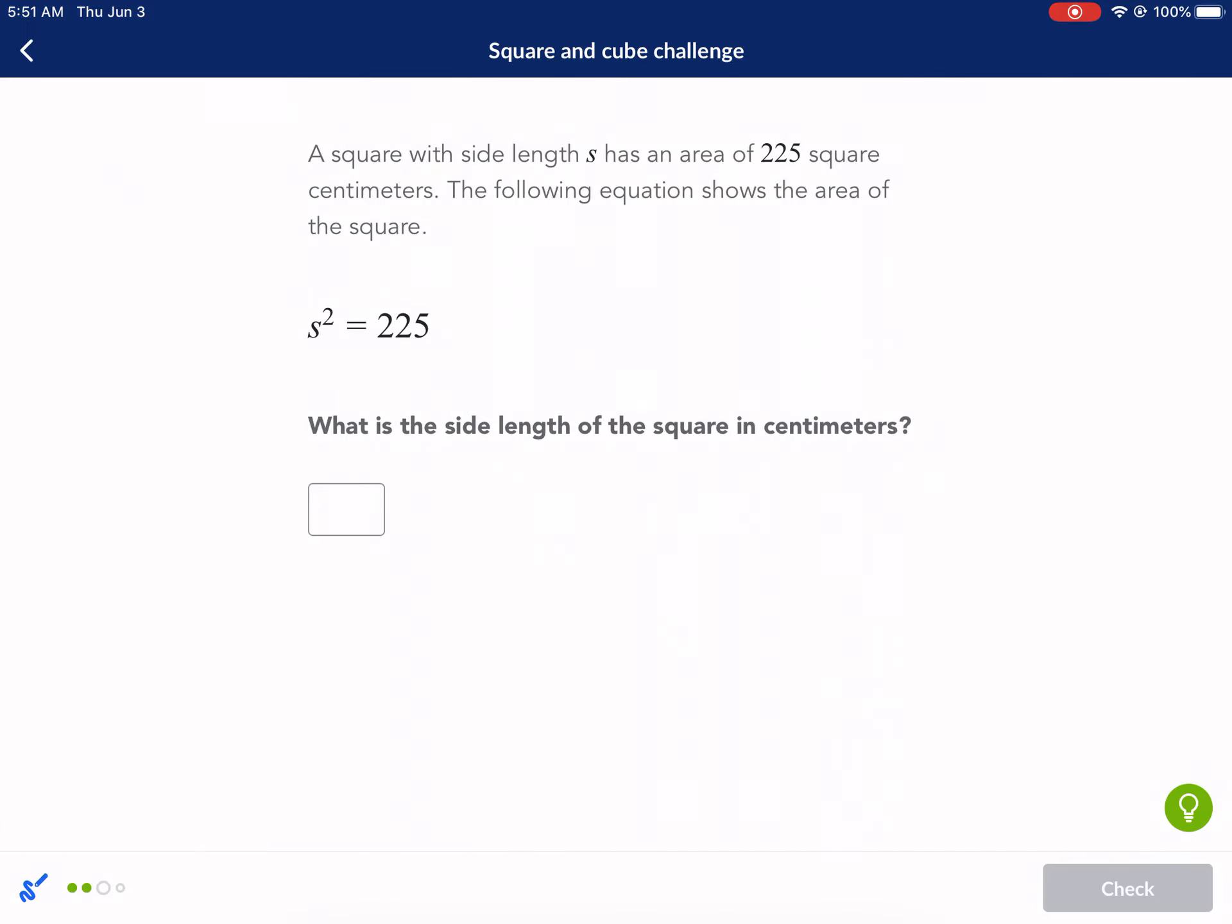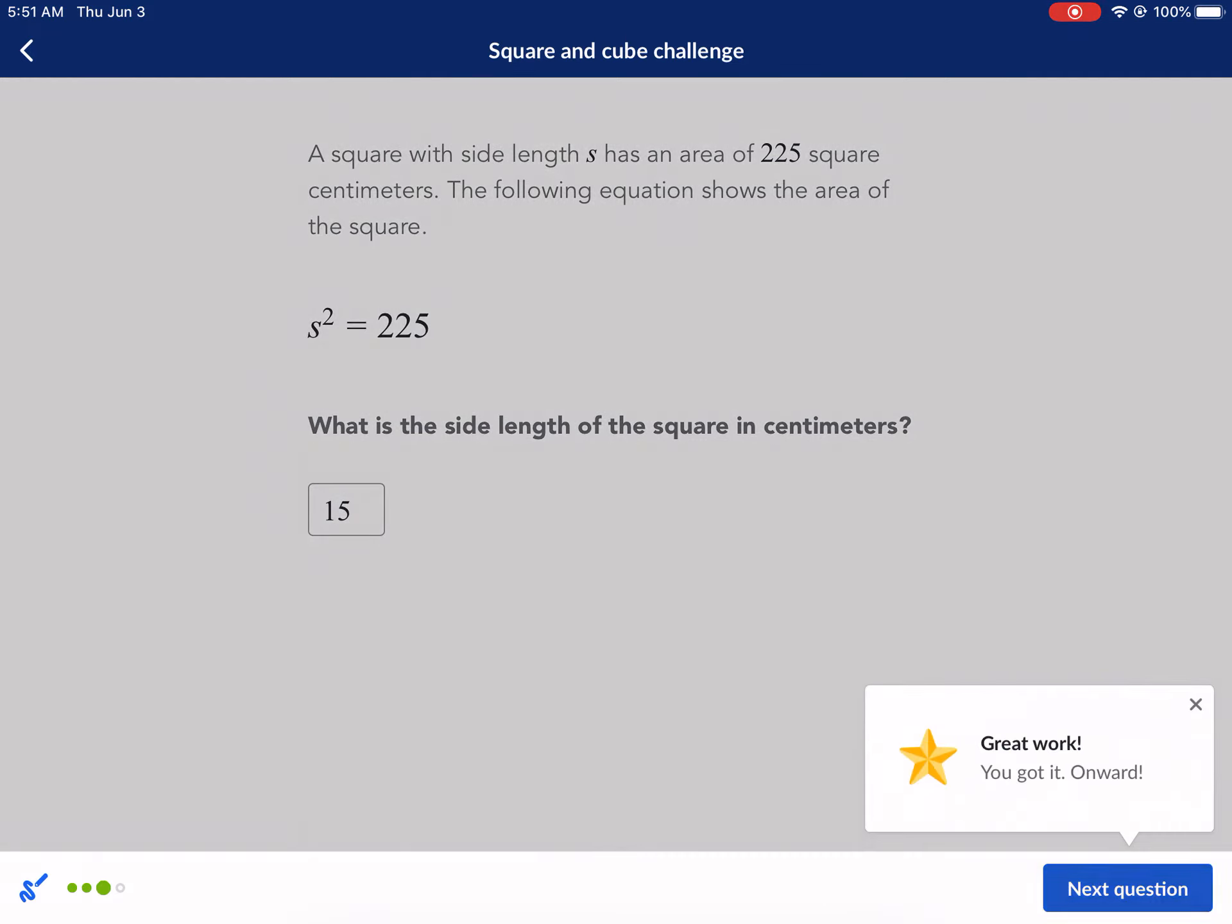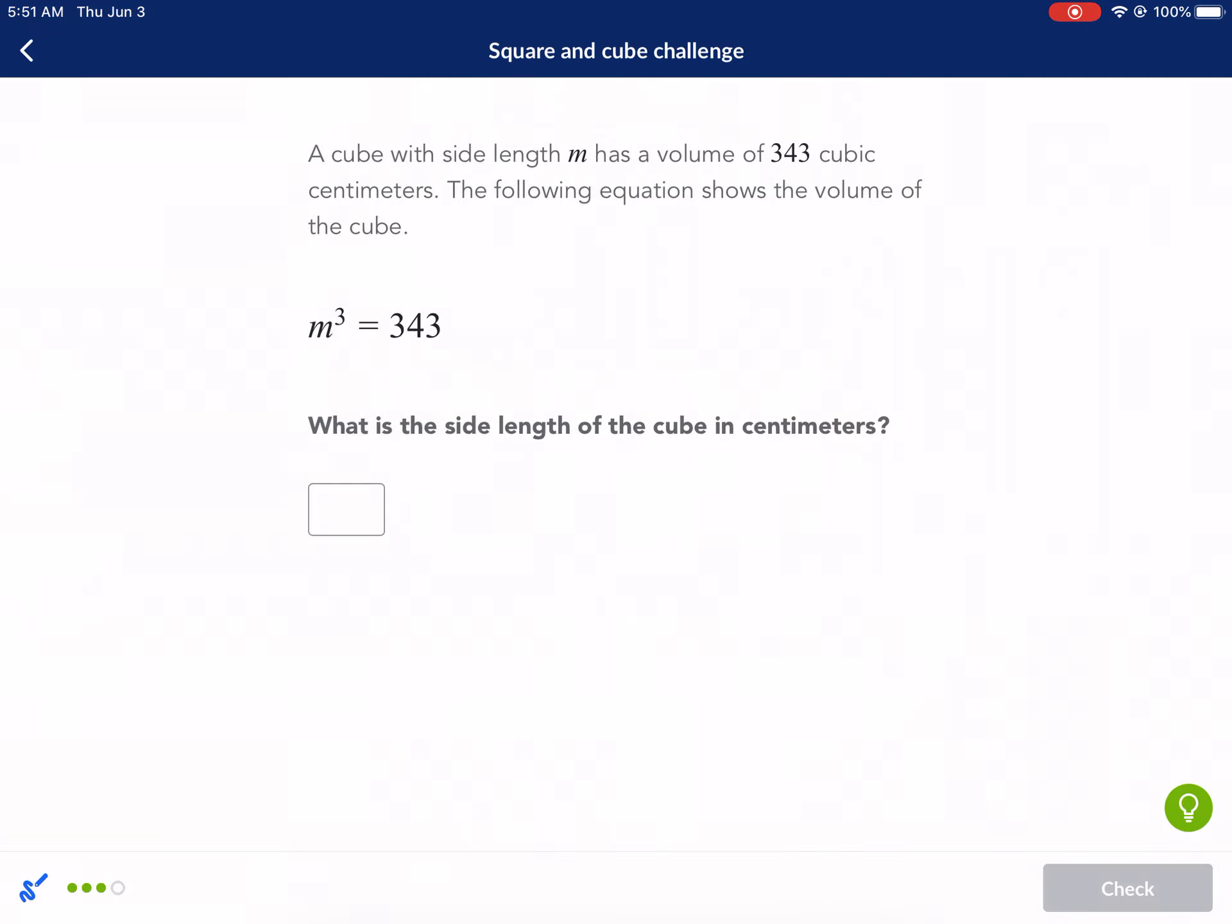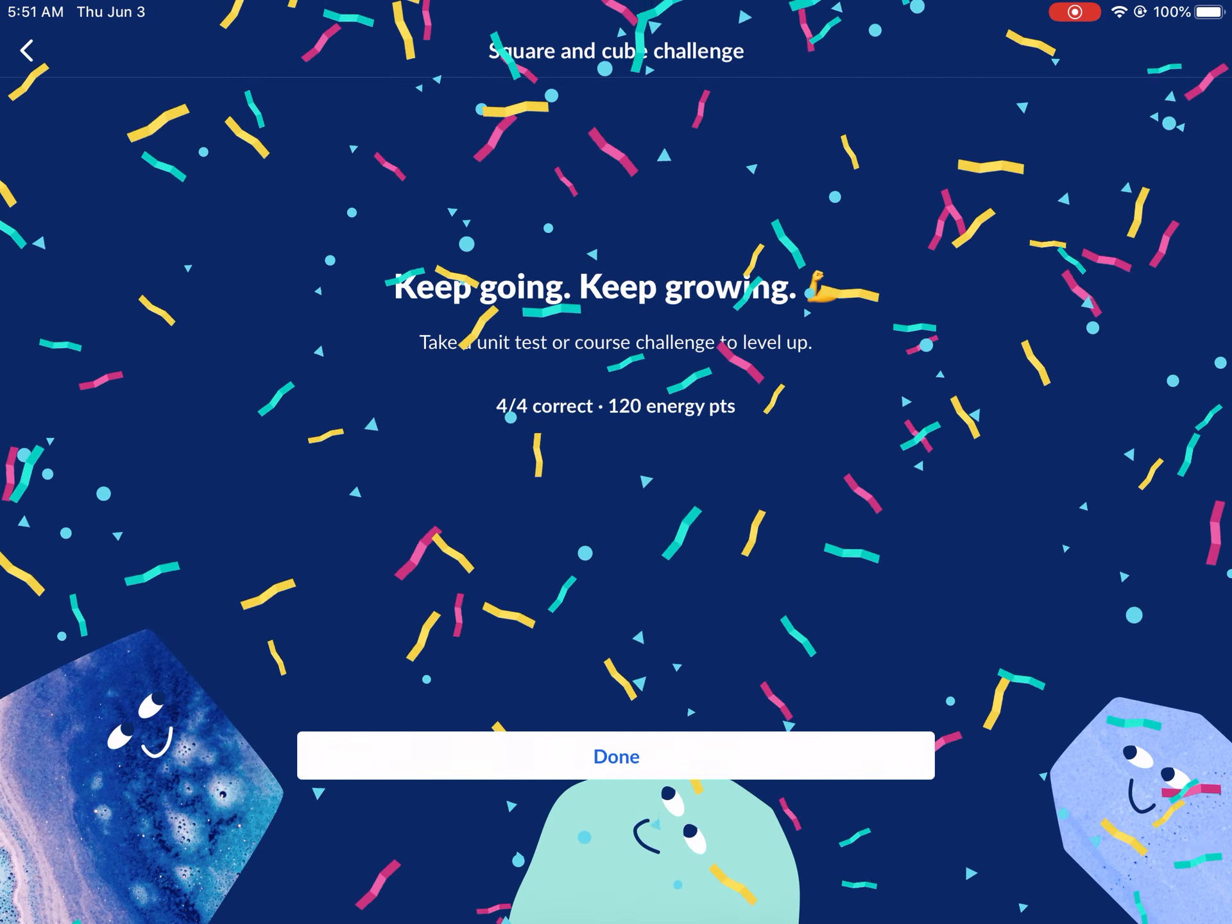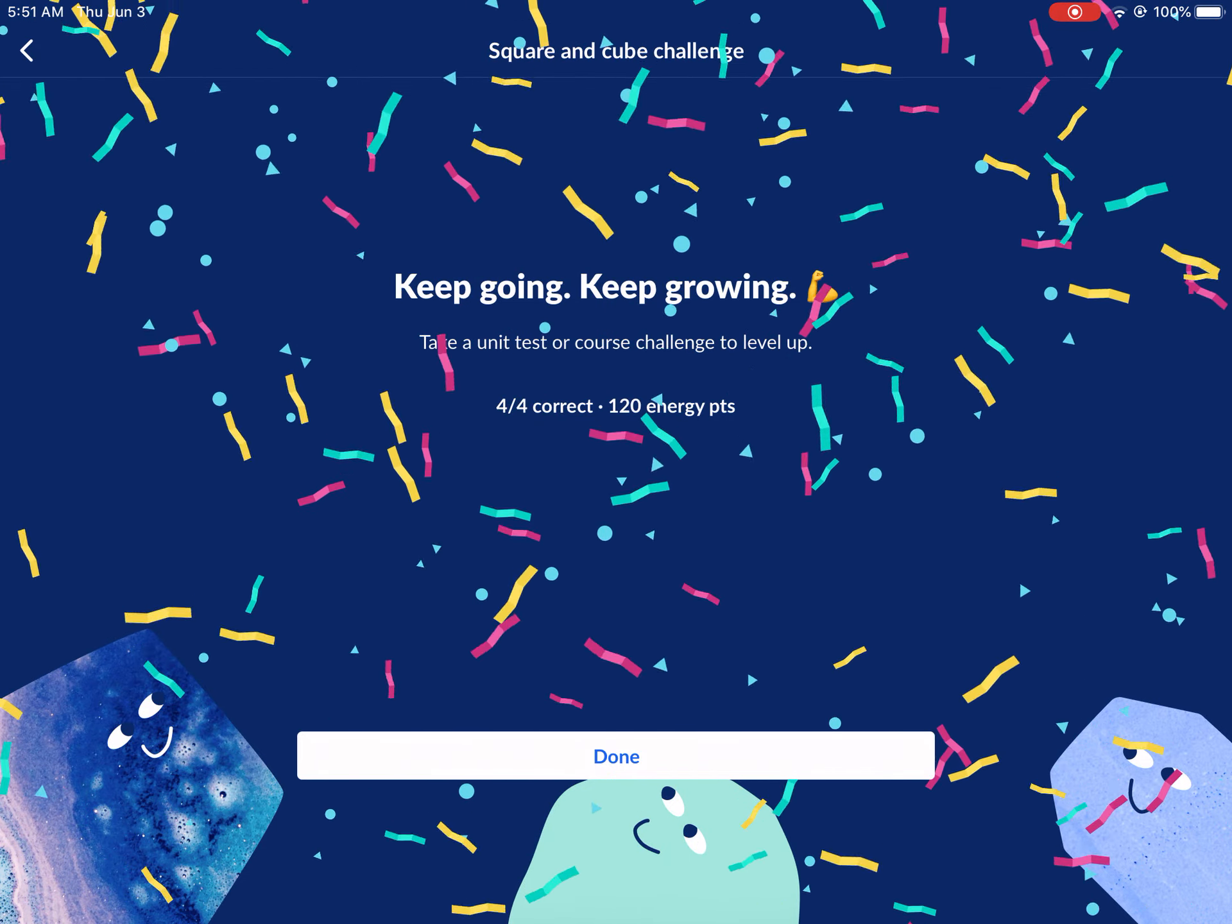This one, we just take the square root, and we already had this one. 225, square root is 15. Like I said, not much of a challenge. And then we already had this one. This was 7. Square root of 343 is 7. We got some new problems in there. You got two for one. Hope you like this deal.